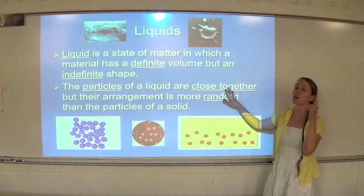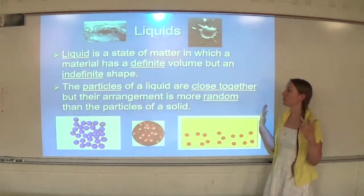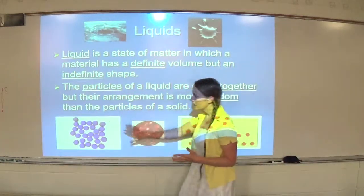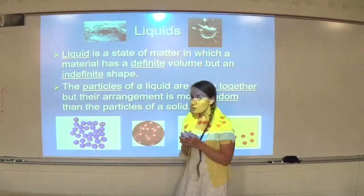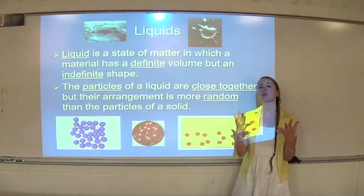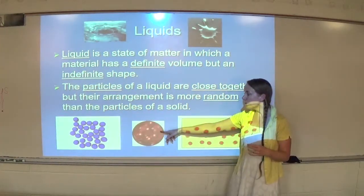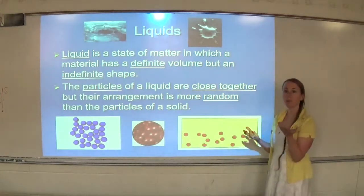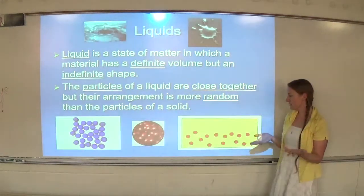The particles of a liquid are close together but their arrangement is more random than the particles of a solid. The particles are very close. If you have to draw a picture, I want them very close but they are not orderly. The particles of a liquid can flow past one another and change places and they're moving faster than a solid.